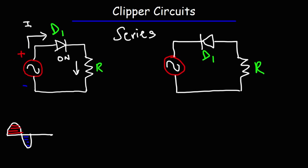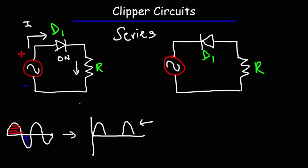So this part is not going to be there. This is the input voltage or the waveform at the input. At the output, this is what we're going to get. The diode conducts during the positive half cycle, so we're going to get a waveform there. But it doesn't conduct during the negative half cycle, so that part is going to be clipped. Because it clips the negative half cycle, this is called a negative series clipper circuit — it clips the negative part of the waveform.